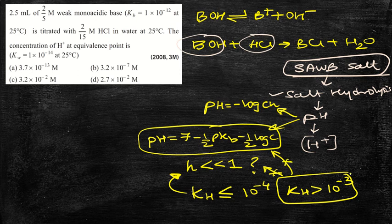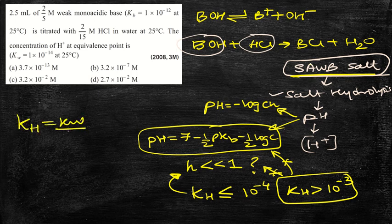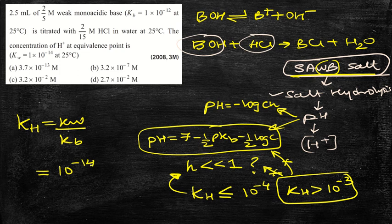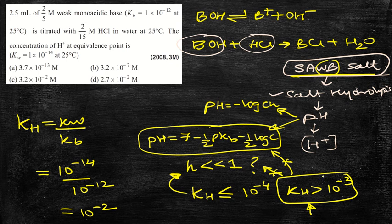For a strong acid-weak base salt, Kh = Kw / Kb, where Kb is for the weak base. Kw = 10⁻¹⁴ at 25°C, and Kb = 10⁻¹². Therefore, Kh = 10⁻¹⁴ / 10⁻¹² = 10⁻². Since Kh = 10⁻² is much greater than 10⁻³, we cannot use the simplified formula — it is invalid here.